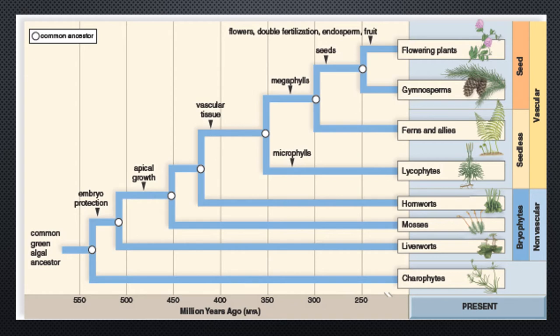We are breaking plant classification down into bryophytes, which are our non-vascular plants, and then vascular plants. Vascular plants have specialized tissue called xylem and phloem that transport nutrients, water, and minerals throughout the plant. Within vascular plants, we distinguish between seedless plants and plants that produce seeds.